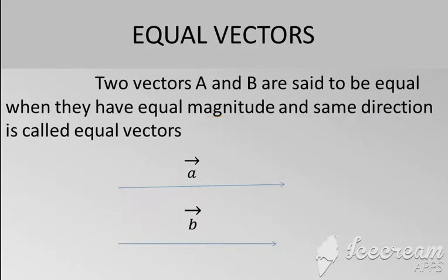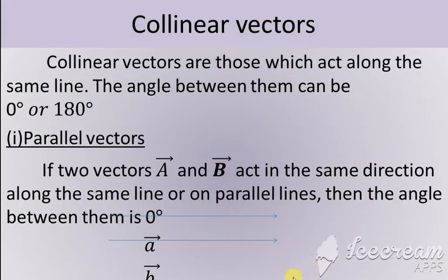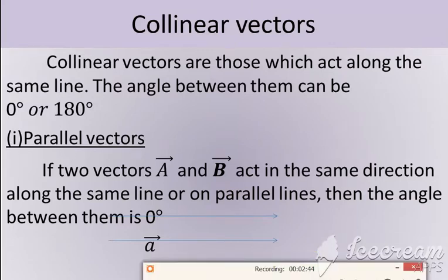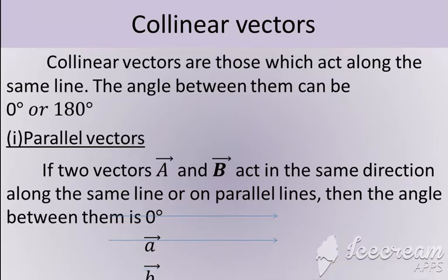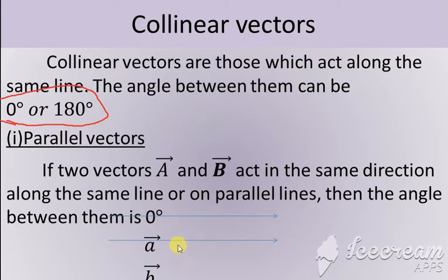The next one is collinear vectors. What are collinear vectors? The collinear vectors are those which act along the same line. If the lines are the same, then they are said to be collinear vectors. In collinear vectors, the angle is either 0° or 180°. Here, this is A and this is B, both acting along the same line, so the angle made is 180°.